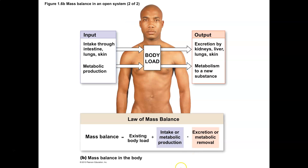The law of mass balance, from an equational standpoint, has positive portions and negative portions. We have terms like existing body load, intake, and metabolic production, and then minus excretion and metabolic removal. This collectively is what we call mass balance. The amount of a substance in the body has to remain constant, and any gains have to be offset by losses — inputs and outputs need to be balanced.